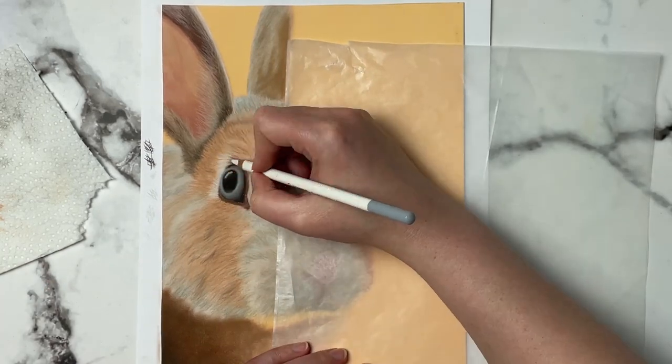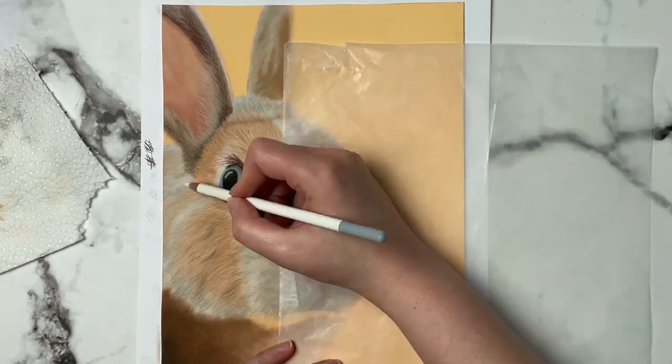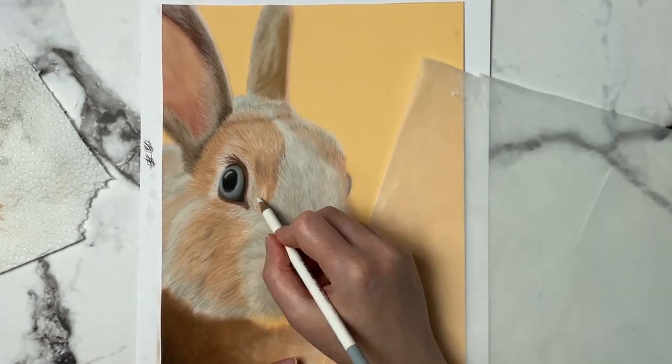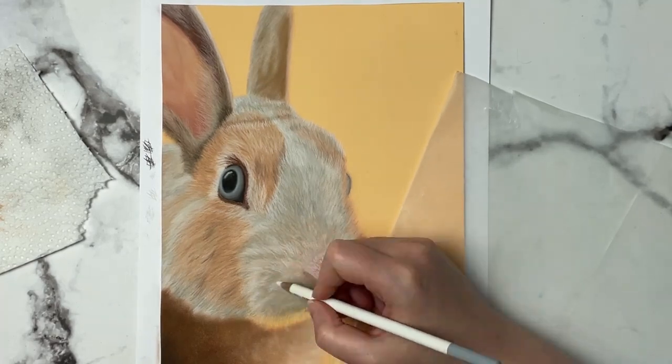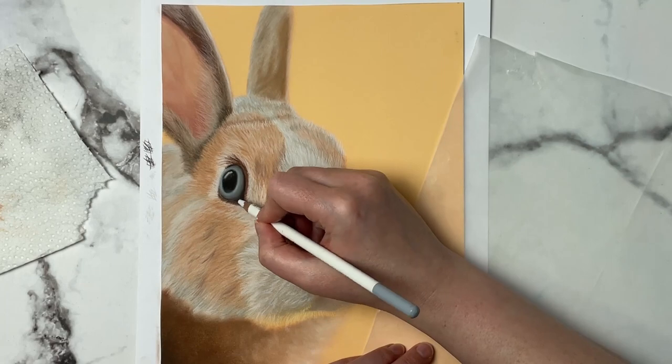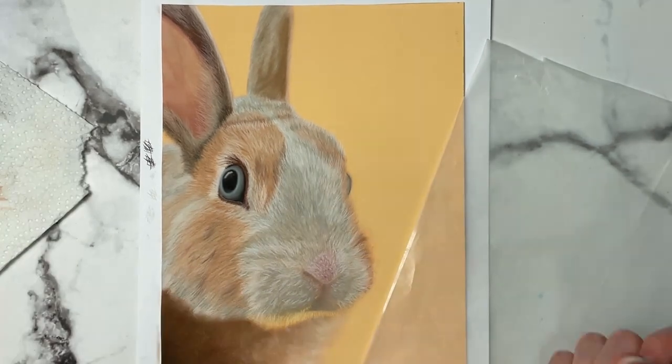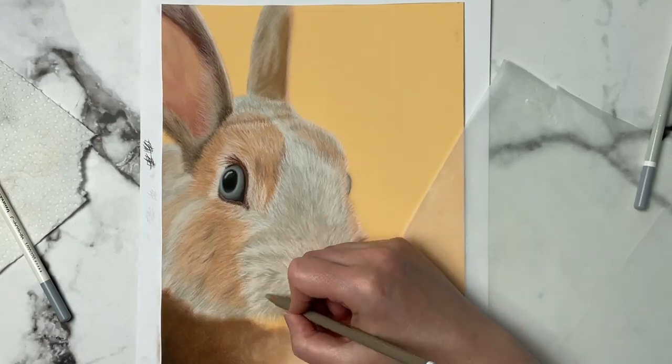Now one of the funnest parts for me is putting in the whiskers at the end. And what I tend to do is do quick long motions and I find that's easiest for me to get like a straight curved line, a very long curved line for the whiskers. And then I can always come over top and thicken it up or make it a little bit darker or brighter if I need to.